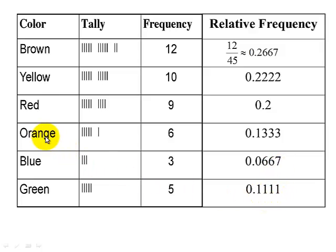These also can be expressed as percents. So for example, orange is about 13%. Blue would be almost 7%. So we are summarizing this data by using tables, both a frequency table and a relative frequency table.